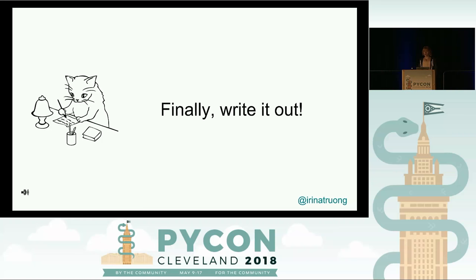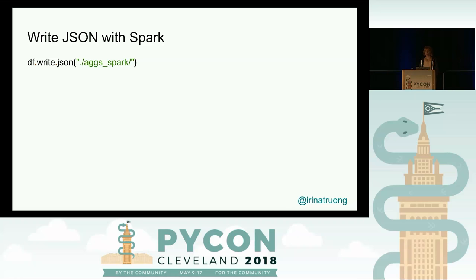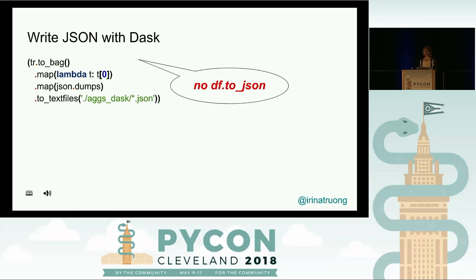To write JSON with Spark, you call data_frame.write.json providing a path. To write JSON with Dask, for some reason Dask DataFrame doesn't have a method to write to JSON — even though you can write to Parquet, HDF, CSV, and multiple other formats. I think it will probably be added at some later point. To work around this, I had to convert my data frame to a Bag, which is an unstructured set of records similar to a Spark RDD, then dump all records as strings and write them to text files.